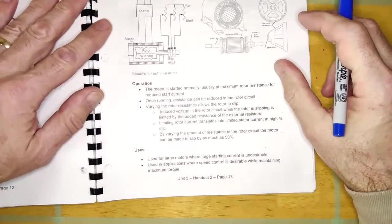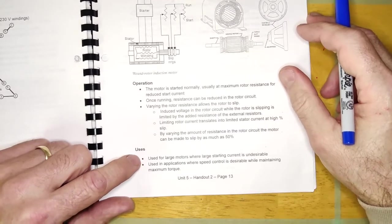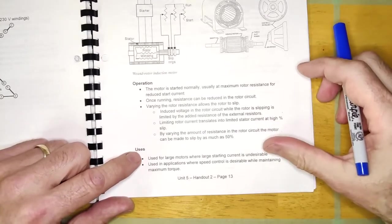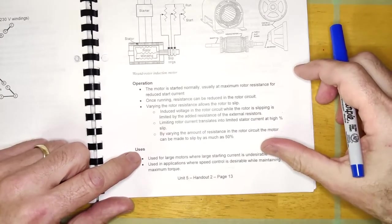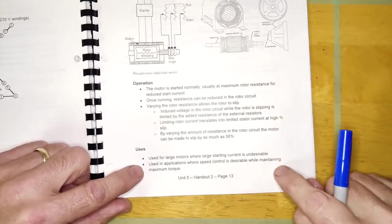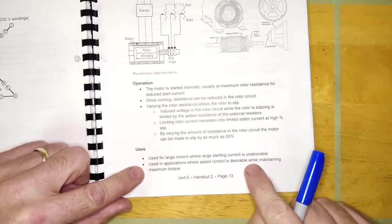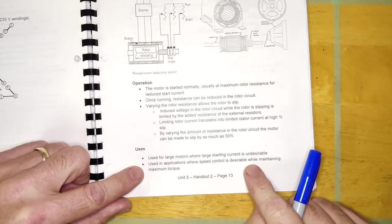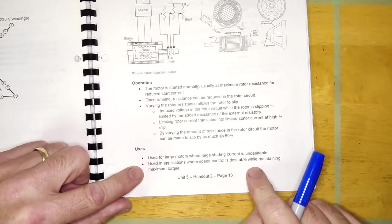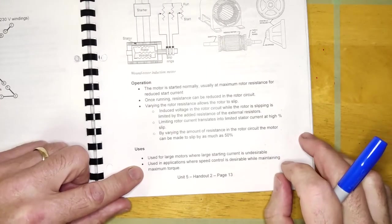So it says here the uses used for large motors where a large starting current is undesirable, maybe in the olden days. But not typically, I don't think, there's other ways to reduce start current. You could use a soft start and things like that. Used in applications where speed control is desirable while maintaining maximum torque. And that's really what the wound rotor motor was designed for. It was for speed control of an AC motor without having to change the frequency.